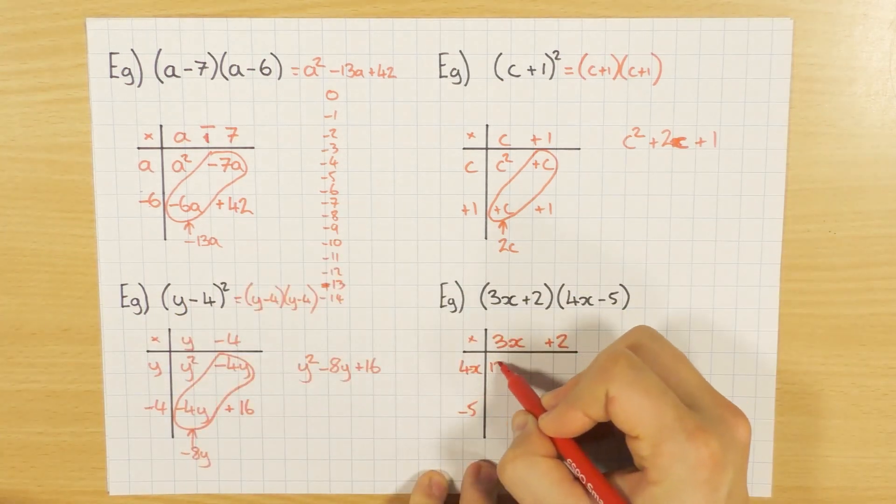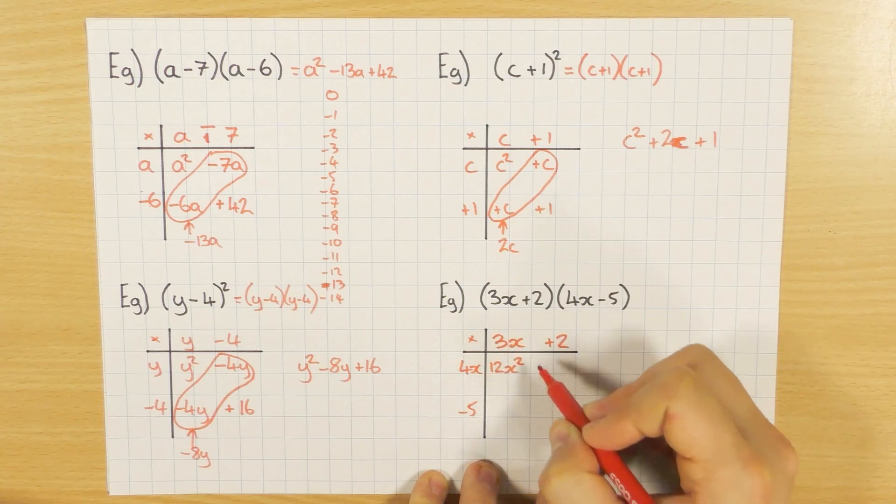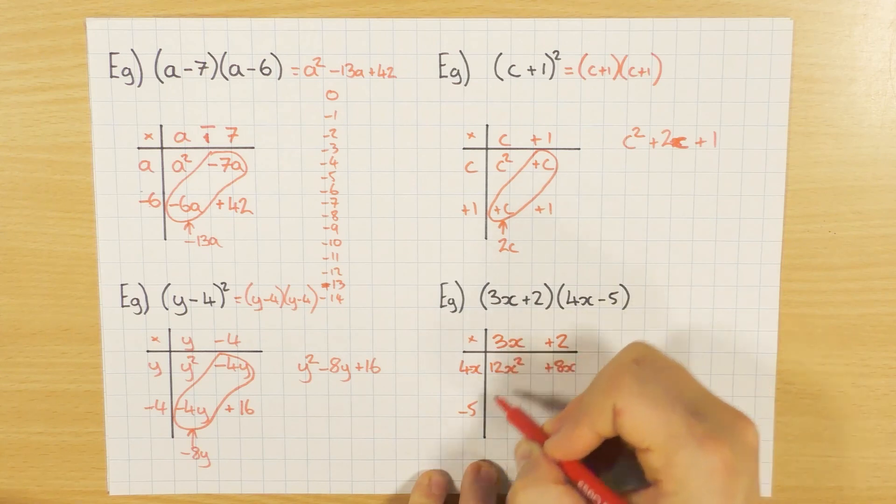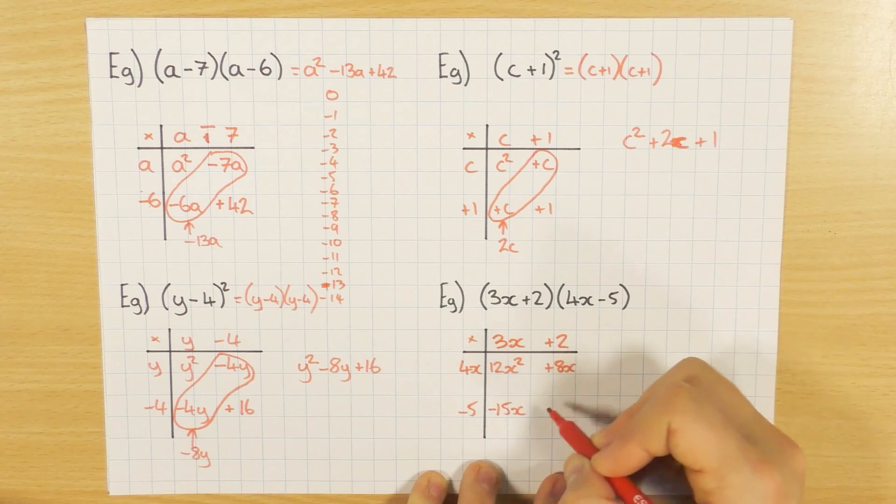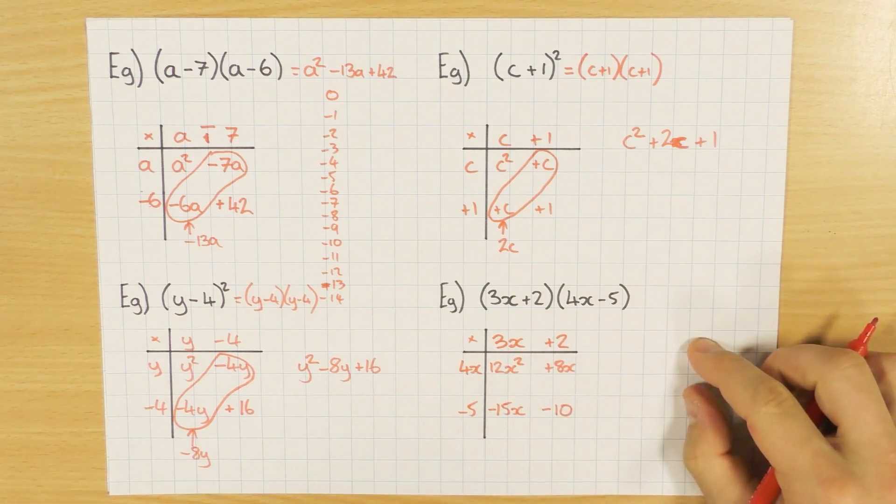So 4 times 3 is 12, x times x is x squared, 2 times 4x will be 8x, 3x times minus 5 is minus 15x. And minus 5 times 2, well they're different signs, one's negative one's positive, which gives me a negative answer of minus 10.